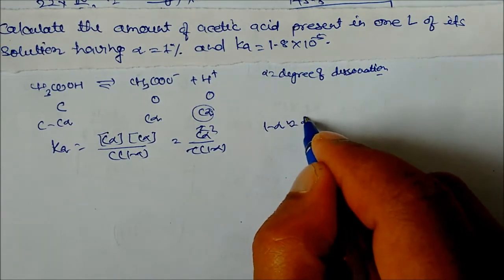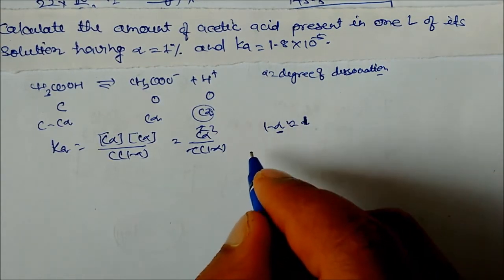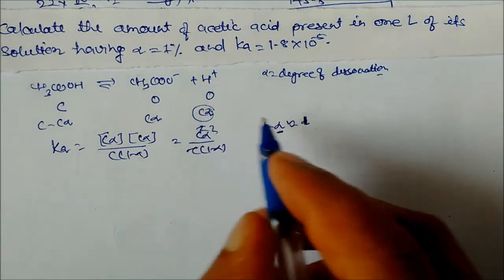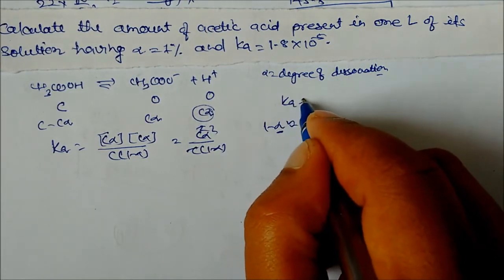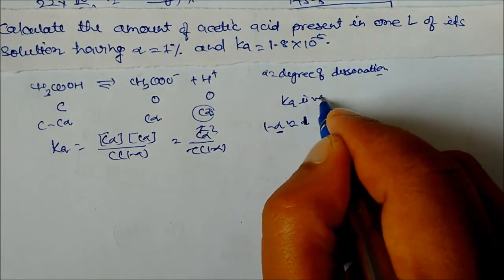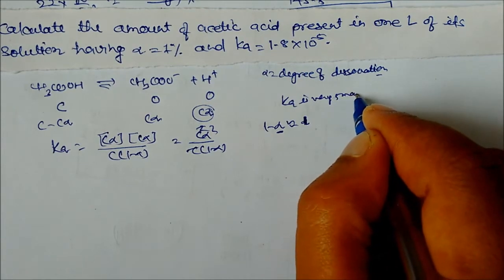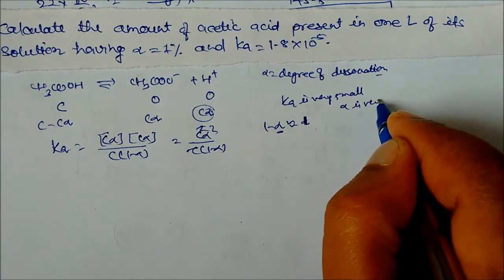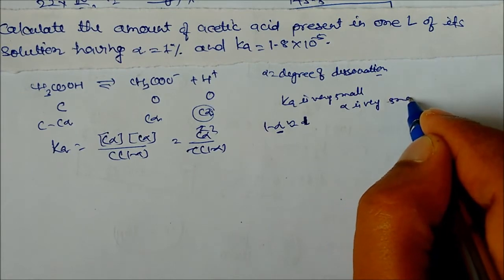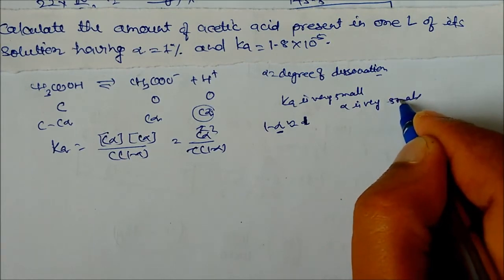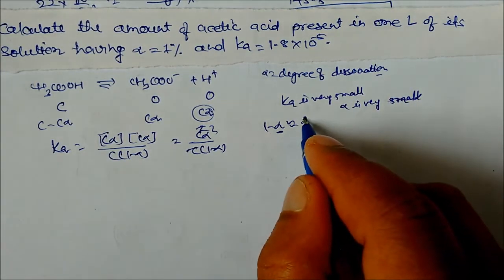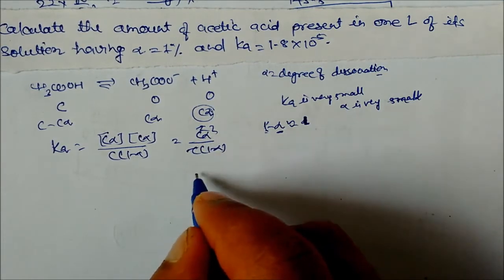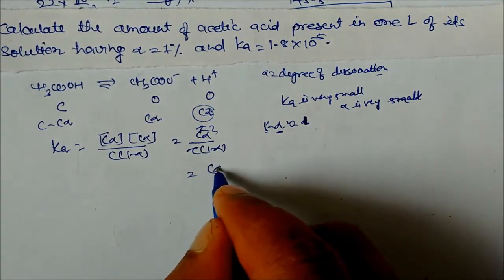Since Ka is very very small, alpha will be very small as well. So 1−α ≈ 1, and we can write Ka = Cα². Now putting in the value of Ka = 1.8×10⁻⁵ and alpha = 1% = 1/100, we need to find concentration C.